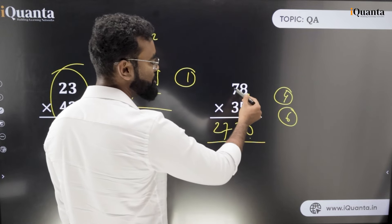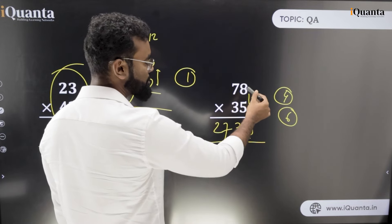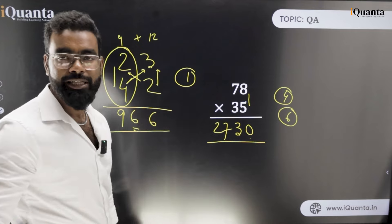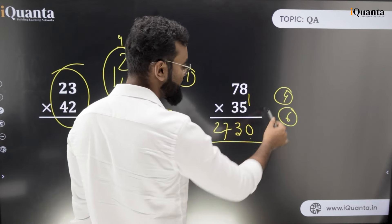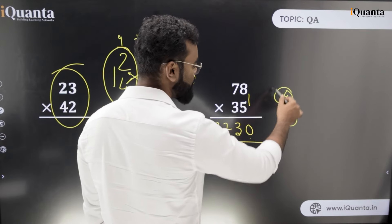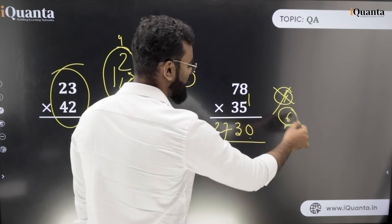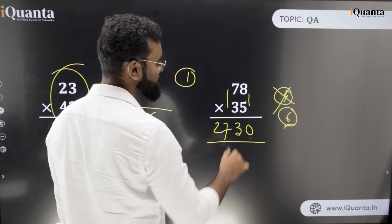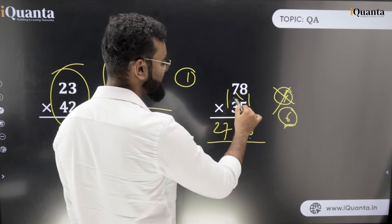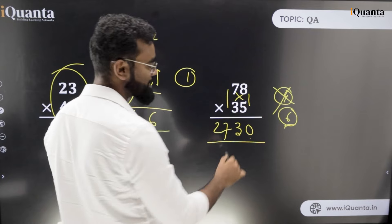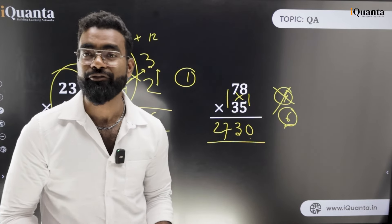Let me recap: 8 into 5 is 40 — 0 written, carry 4. Then 5 into 7 is 35, plus 3 into 8 is 24, giving 59, plus carry 4 is 63 — write 3, carry 6. Then 7 into 3 is 21, plus 6 is 27. Those are the three steps and that's how we can do any two-digit multiplication very fast.